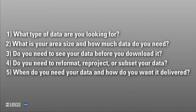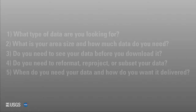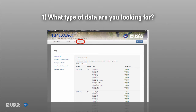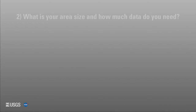What type of data are you looking for? APPEARS provides access to tiled MODIS data as well as Conterminous United States, CONUS, and Alaska WELD data. From the Help tab, you can view the products currently available in APPEARS.